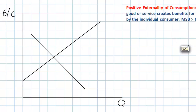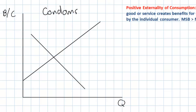Let's look at our market on the left here and we'll first come up with an example of a good that fits this definition and then illustrate what that market would look like incorporating our positive externality into the analysis. The market we're going to look at is actually the market for condoms. This may seem completely random, but condoms are a good that create many benefits for society as a whole that exceed the benefits enjoyed by the individuals using condoms.